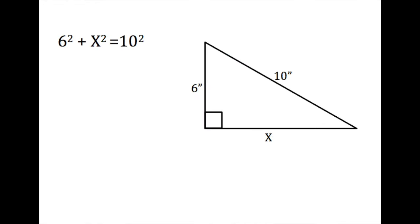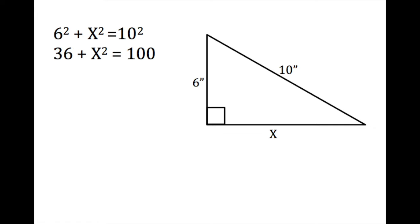So we set it up by saying 6² + x² = 10². And then when we square those numbers, we get 36 + x² = 100.